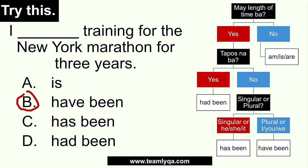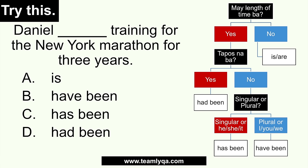Now let's change the sentence with a different subject — same concept. Daniel blank training for the New York Marathon for three years. First question: is there a length of time? Yes — three years. Next question: is the action done? No indication that it ended, so we assume it's still ongoing. Since it's not done, next question: singular or plural? Daniel is one person — singular. So we fall to has been. Daniel has been training for the New York Marathon for three years.